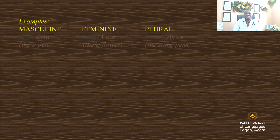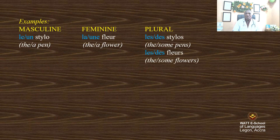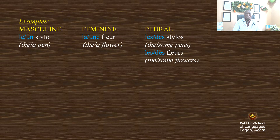Examples — masculine and feminine. Looking at the table, we have masculine le and un with 'stylo', feminine la and une with 'fleur', and plural les and des. So: le/un stylo (masculine singular), la/une fleur (feminine singular), les/des stylos (masculine plural), les/des fleurs (feminine plural).